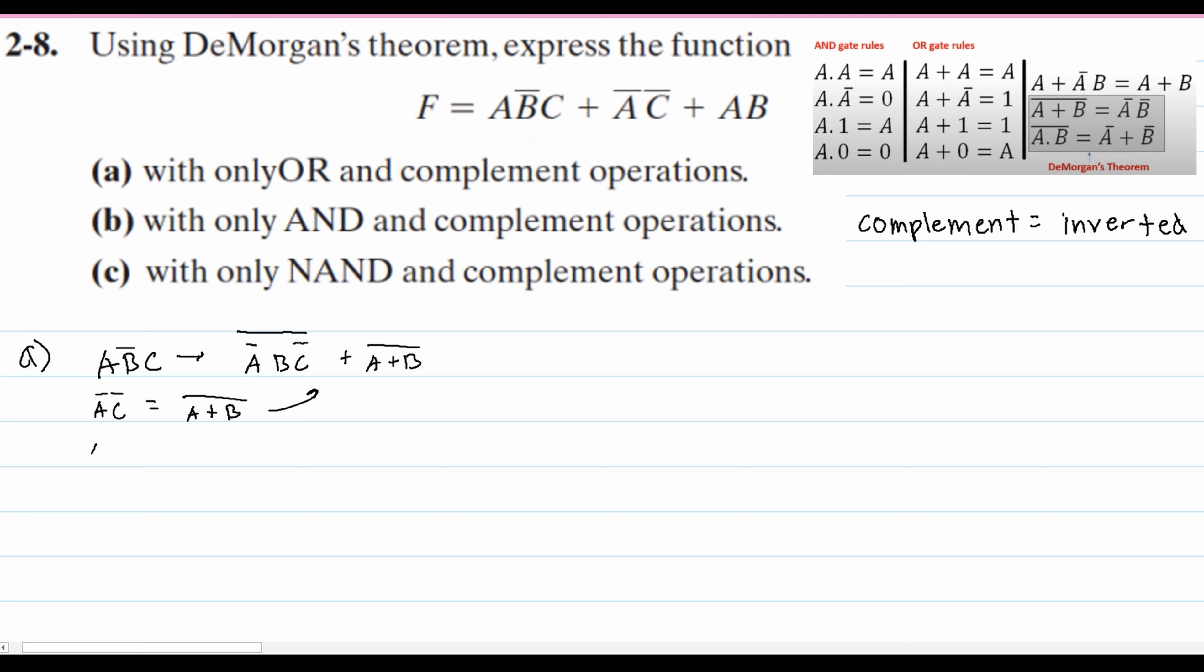Next we are going to look at AB. So for A times B, it's similar to the second De Morgan's theorem.